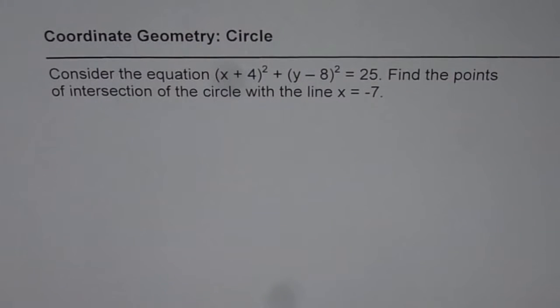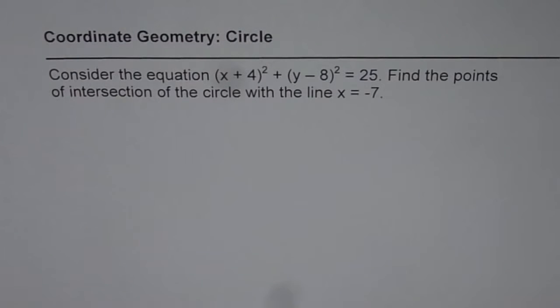I'm Anil Kumar and here is an interesting question for my IB grade 10 students. It's coordinate geometry: circle. Consider the equation (x + 4)² + (y - 8)² = 25. Find the points of intersection of the circle with the line x = -7.